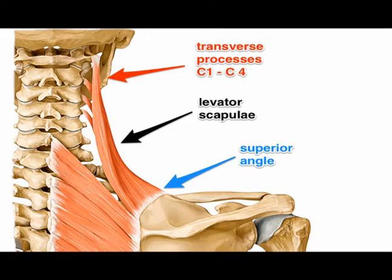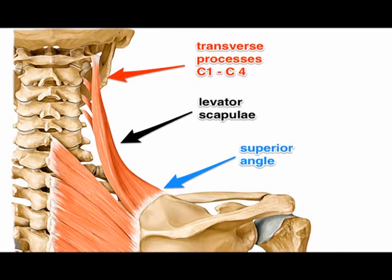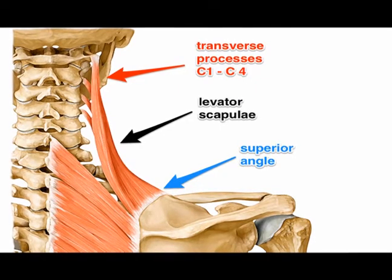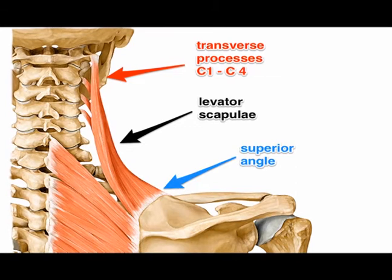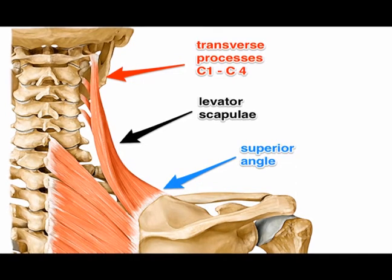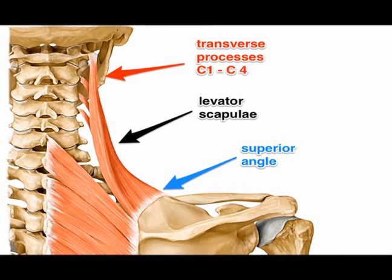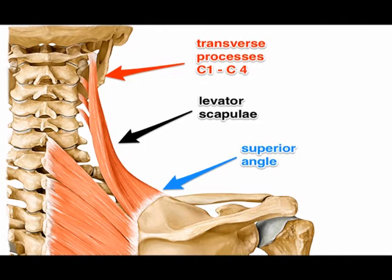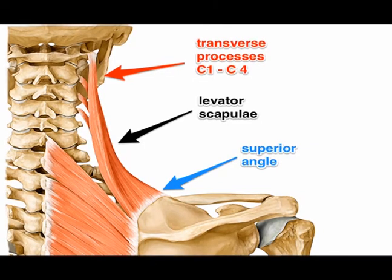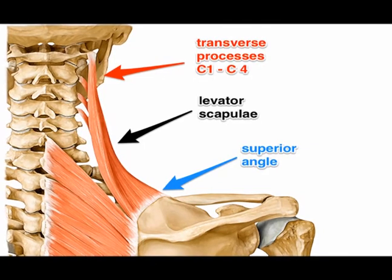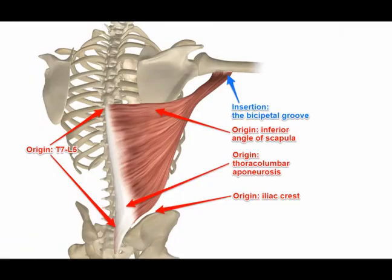Elevation of the scapula is caused by a concentric action of the upper trapezius, the levator scapula, and the rhomboid major and rhomboid minor.